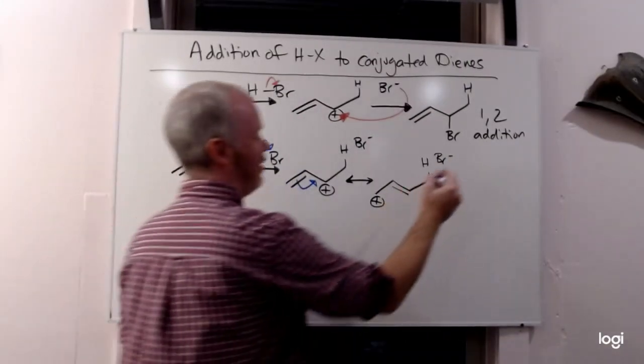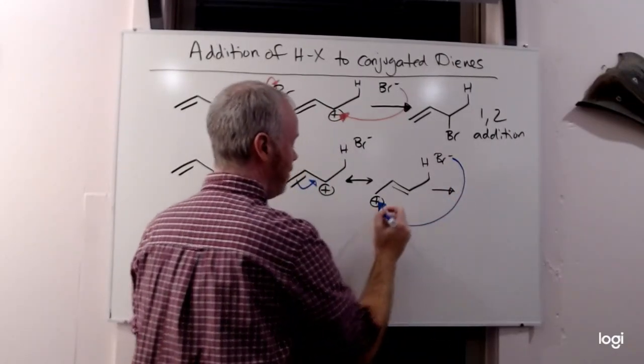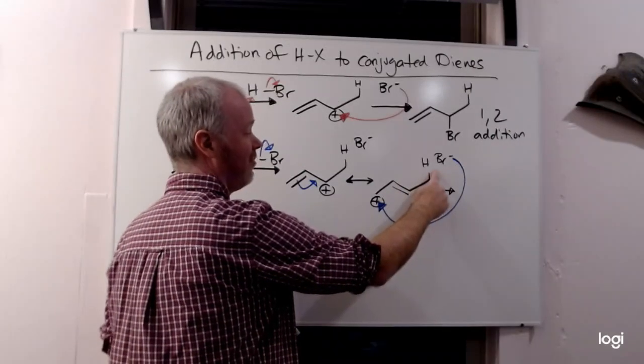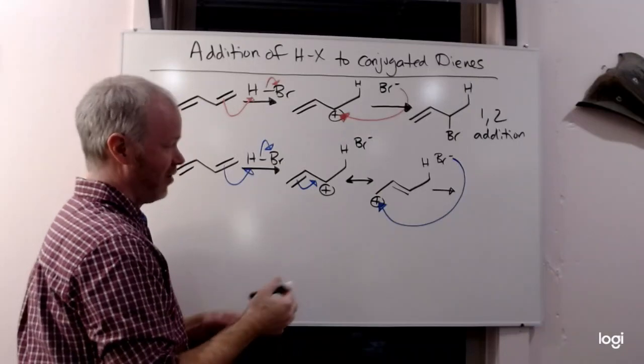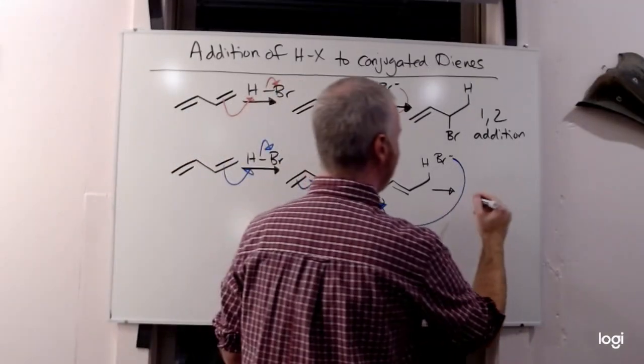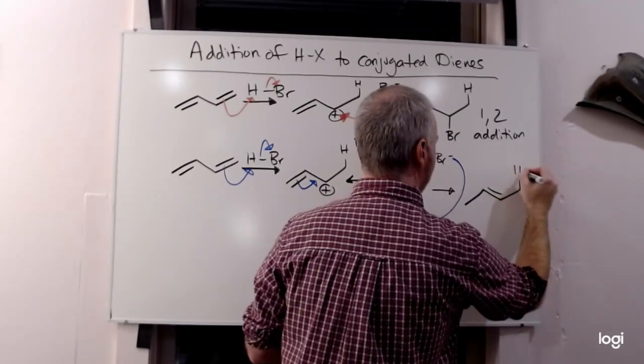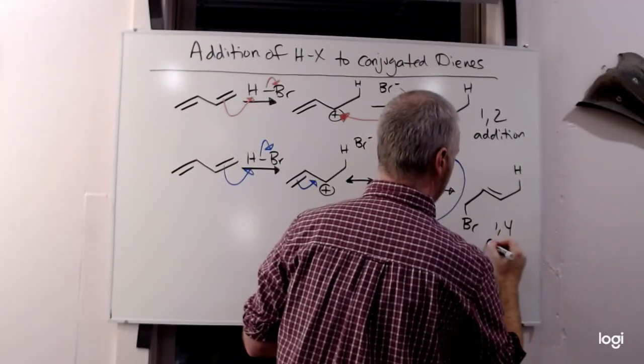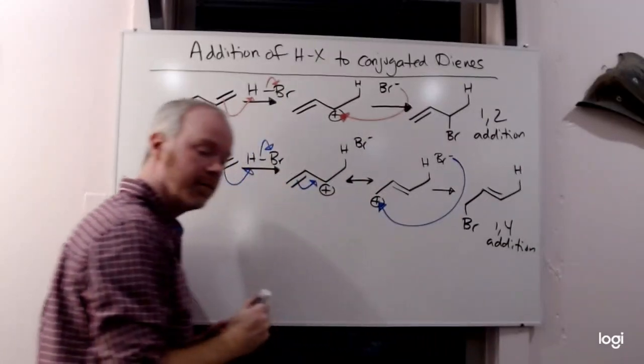And then potentially what we're saying is the bromine nucleophile could add on the far end. So now we've added hydrogen to the second position and the fourth position over there. That's where the bromine is going to go. So if that was the 1,2-addition product, this is obviously then the 1,4-addition.